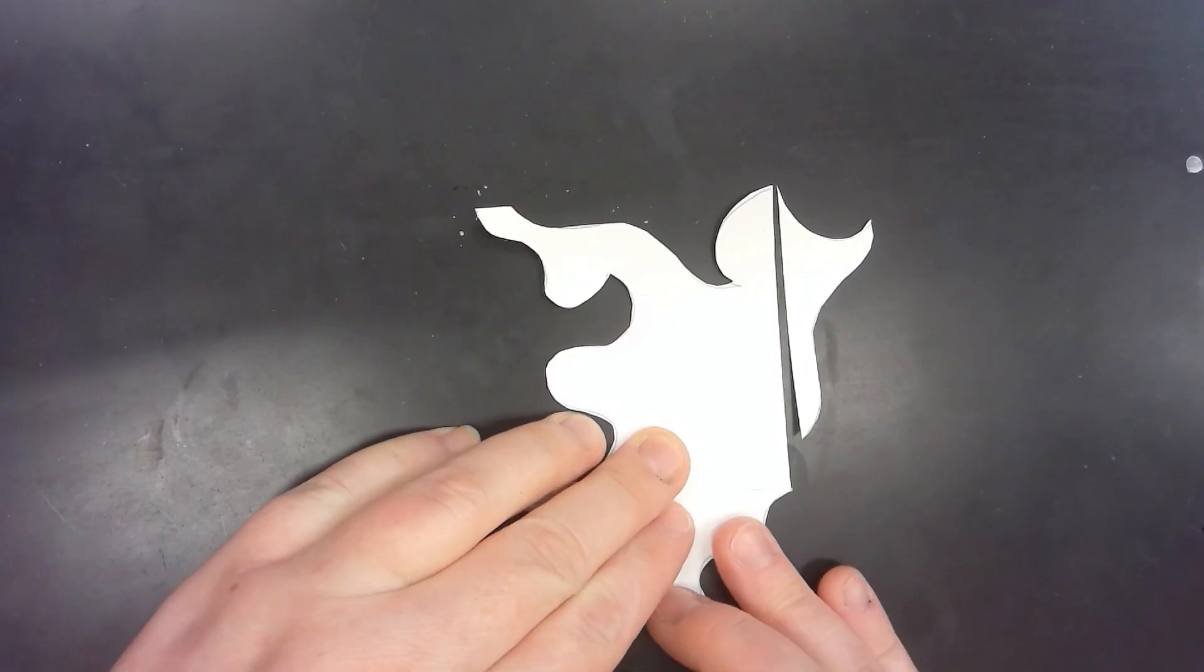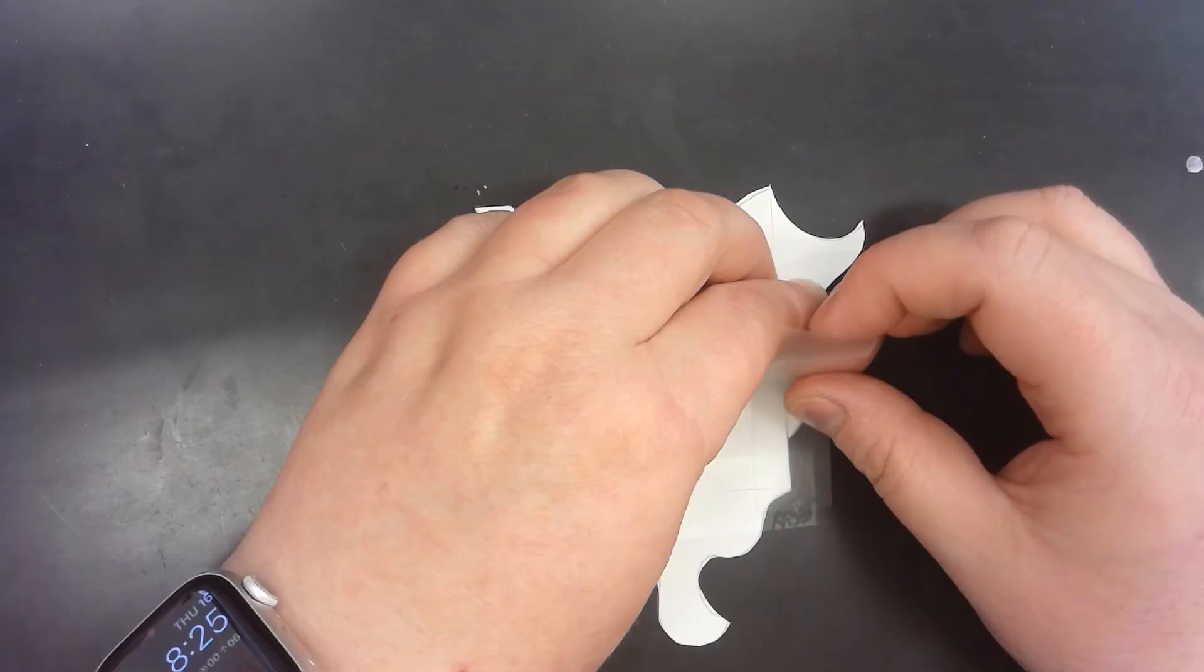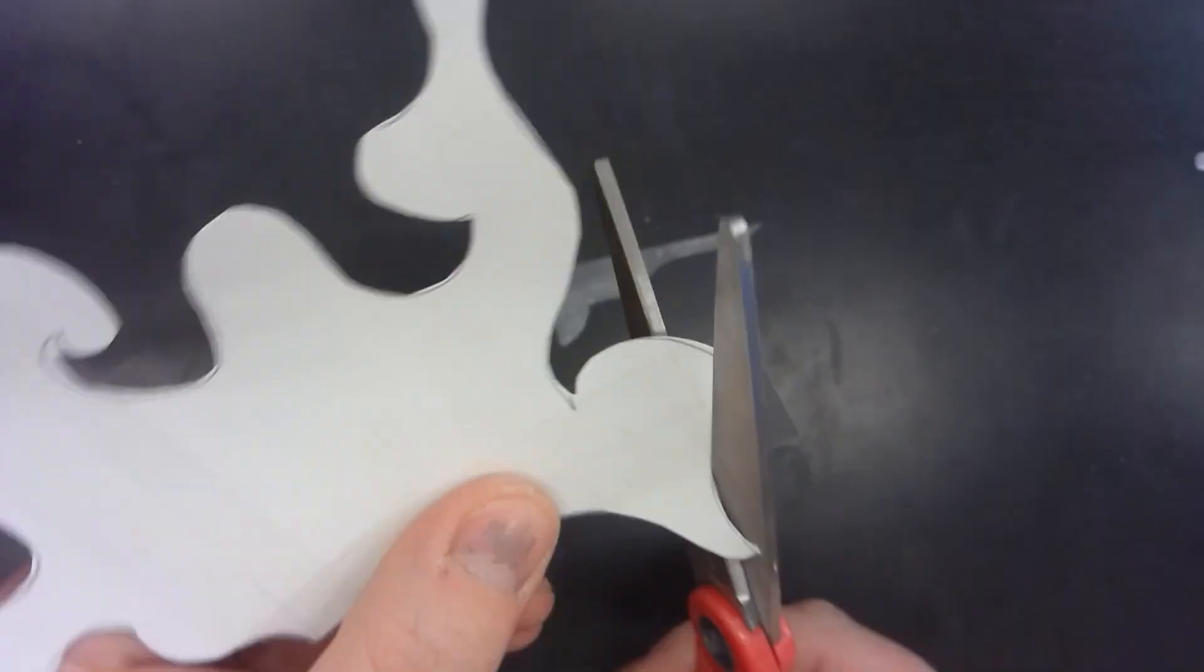Once you have a design picked out, then you're going to tape it together. I like to tape the front and the back and then trim the tape off.